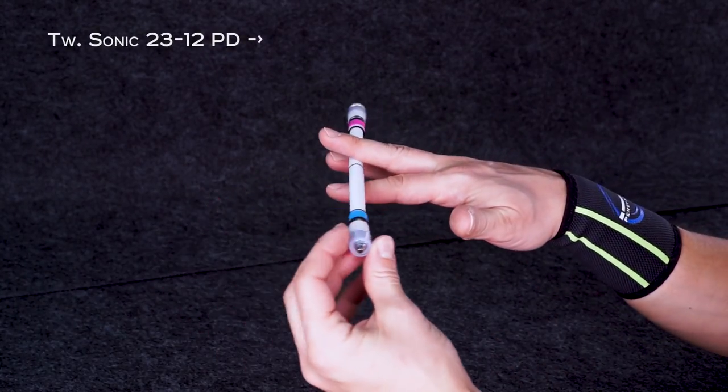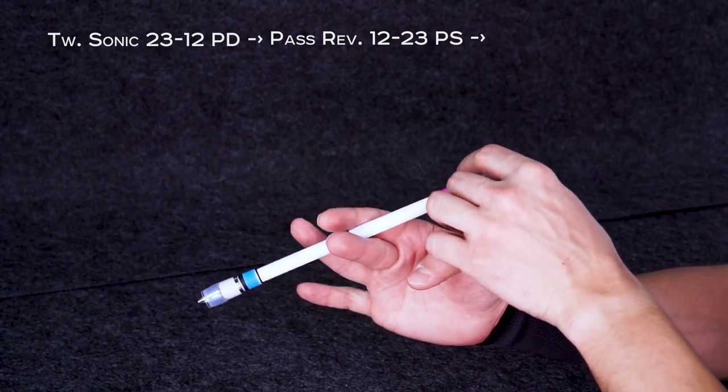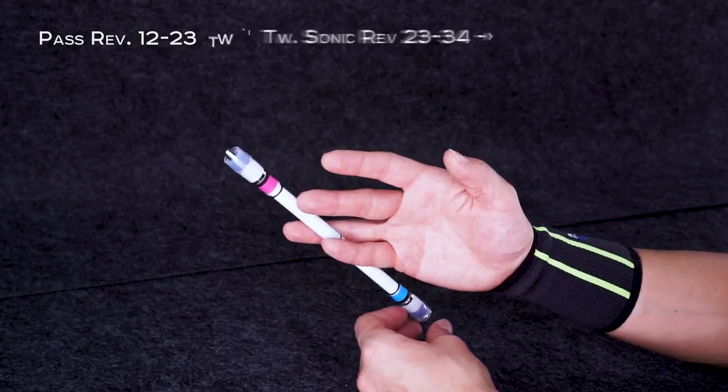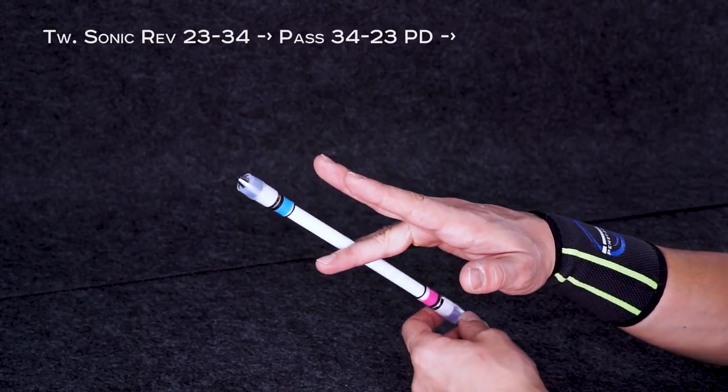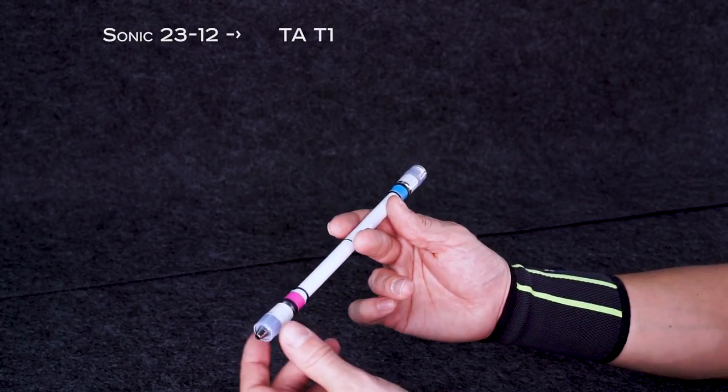So, let's repeat this mini combo from the very beginning to the very end. Twisted Sonic 2312 palm down, Pass Reverse 1223 palm side, Twisted Sonic Reverse 2334, Pass 3423 palm down, Sonic 2312, Thumbaround T1.